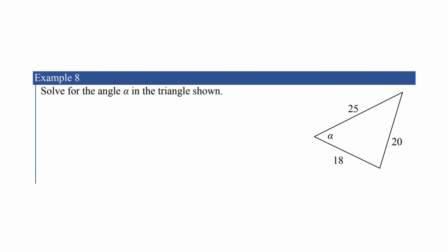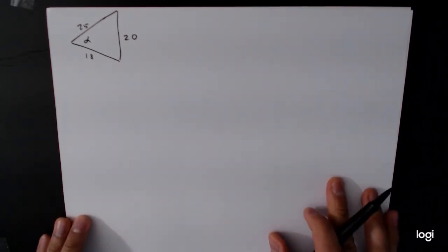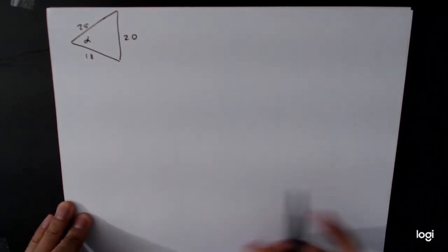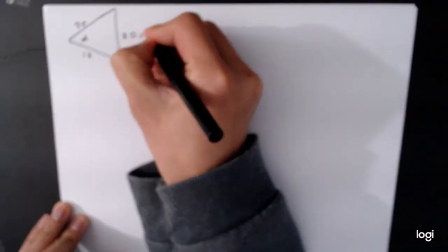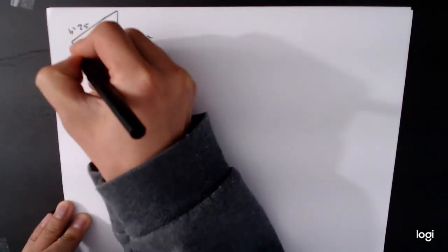Let's look at example eight. Solve for the angle alpha in the triangle shown. Now, it's very important here to read the instructions. A lot of students may jump into this one and just try to solve for everything when it's only asking you to solve for alpha. All right, so we have this triangle. We're going to use the law of cosines. And so again, I'm going to label the sides. That's A. I'll call that one B and that one C.